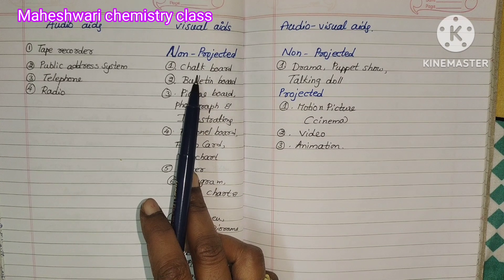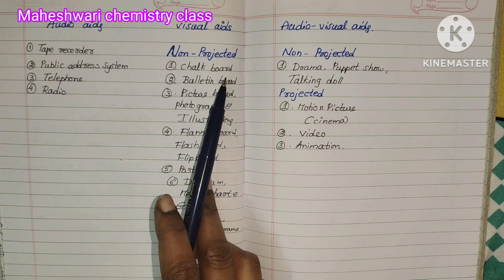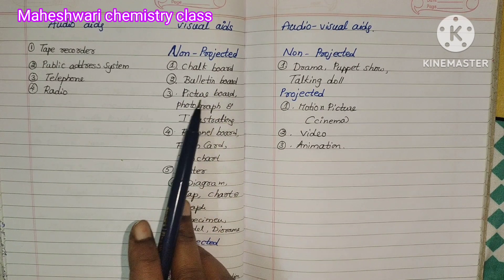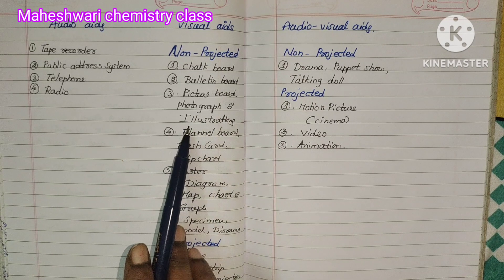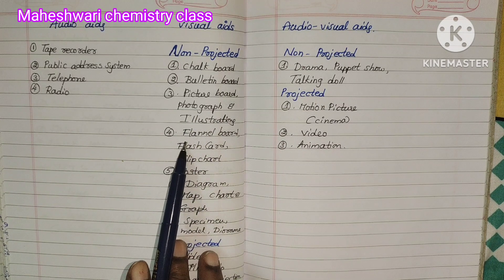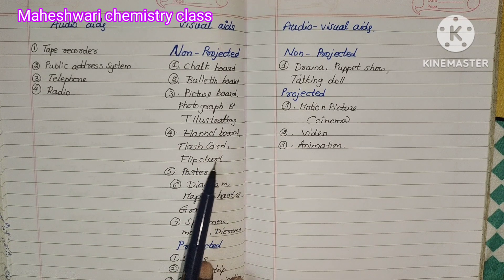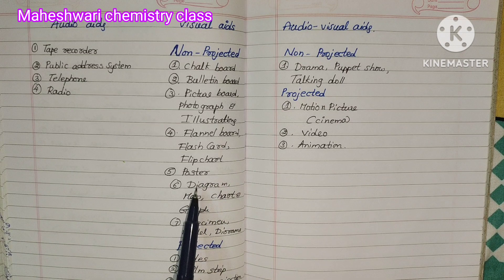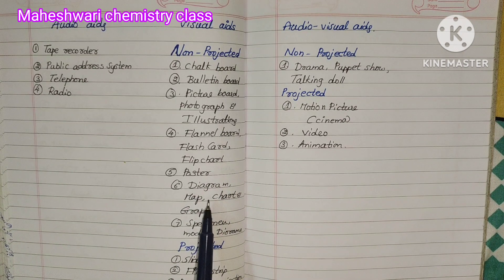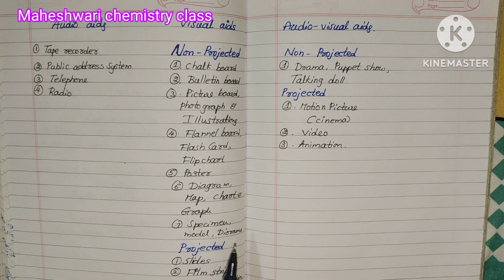Non-projected visual aids include: chalkboard, bulletin board, picture board, photograph, illustrations, flannel board, flashcard, flip chart, poster, diagram, map, chart, graph, specimen, model, and diorama.